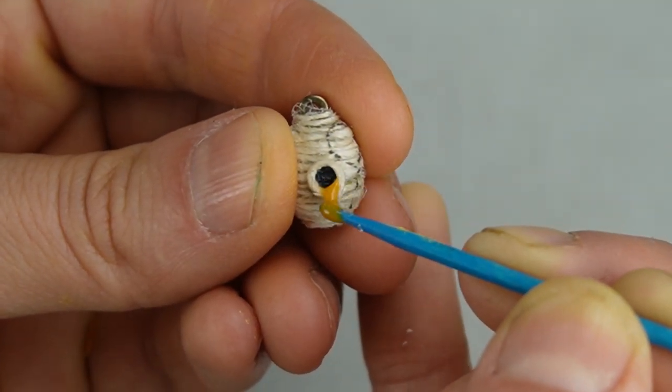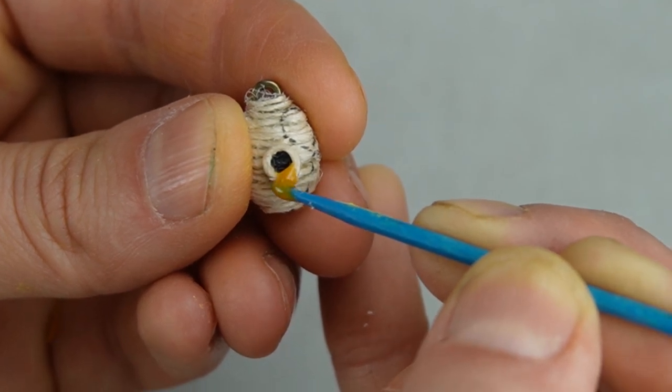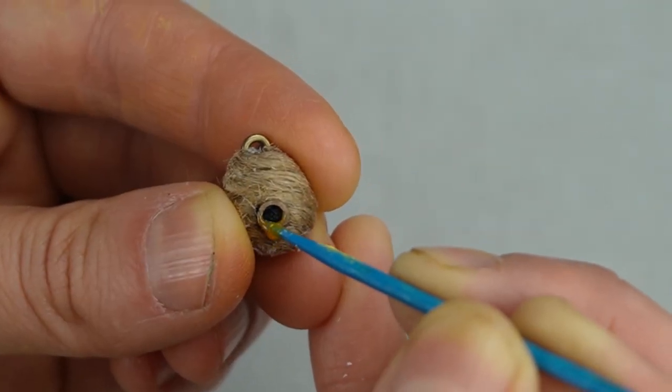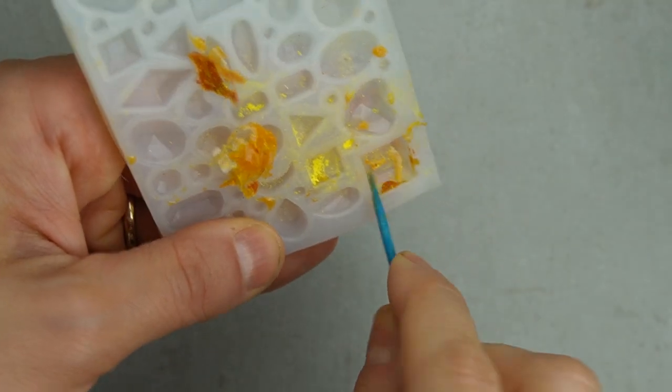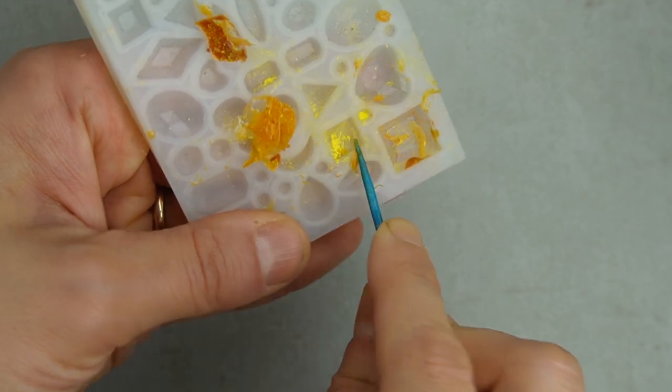I liked the look of this dripping honey I saw in some reference images on Google. I cured this with a UV light. UV resin is toxic until it's cured, so cure it before you clean up.